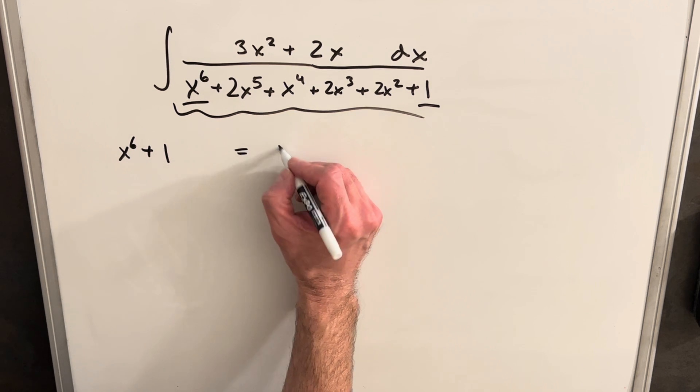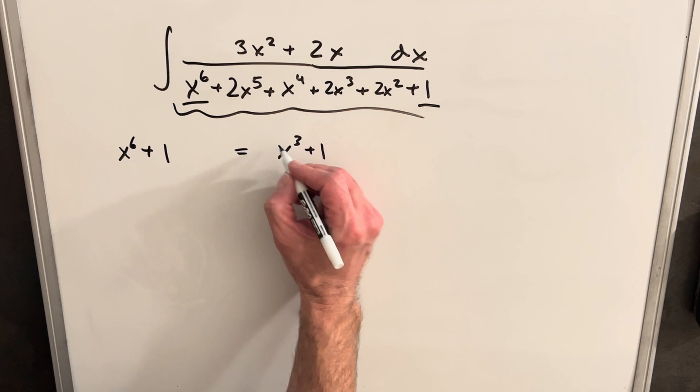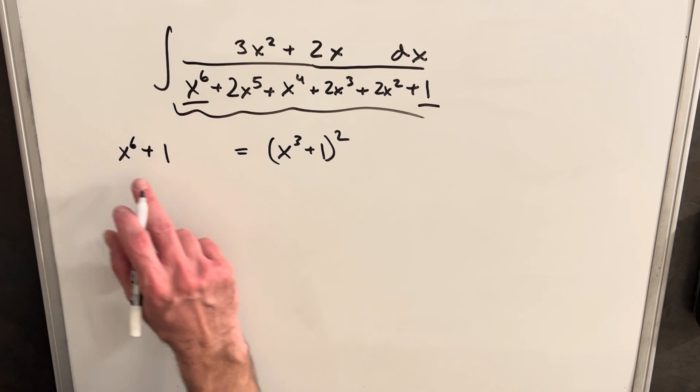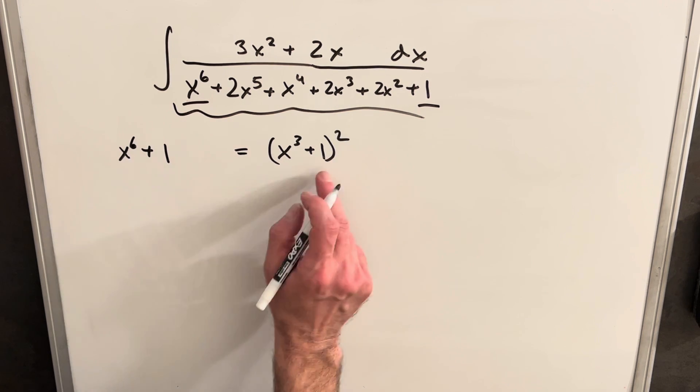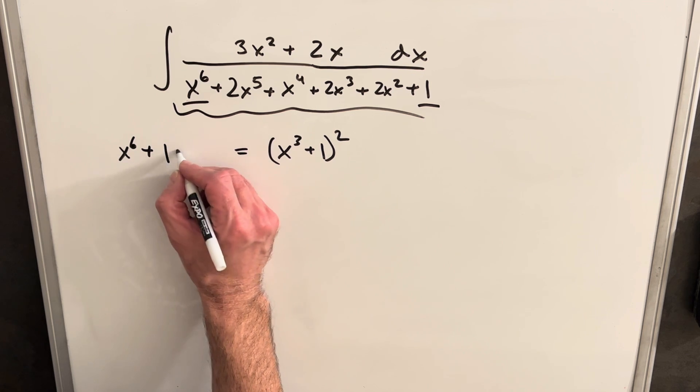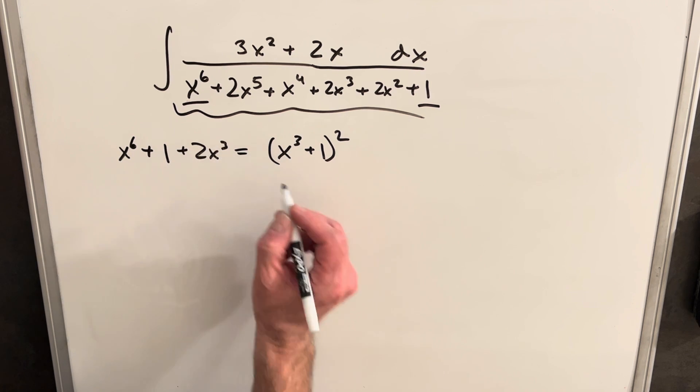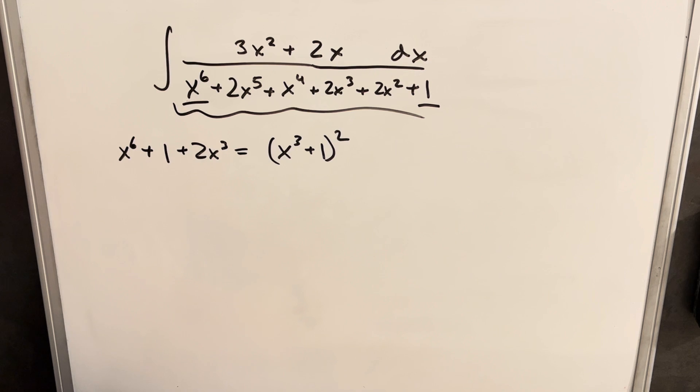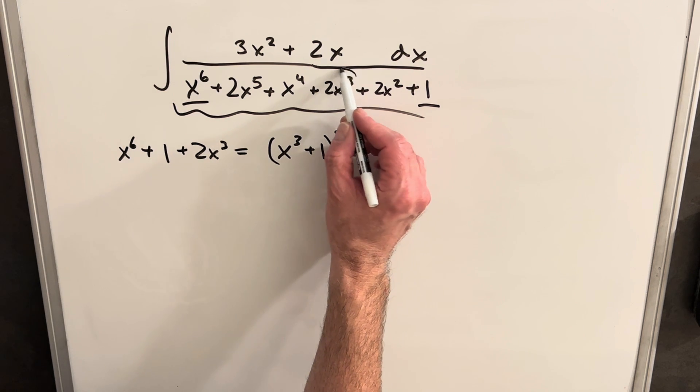Now if we write this as x cubed plus 1 squared, we get our x to the 6 plus 1, and then we add another term, 2x cubed, when we multiply the inner terms. But we actually have that term too,